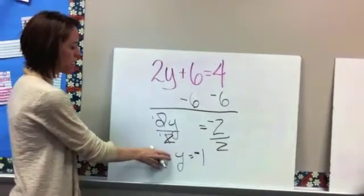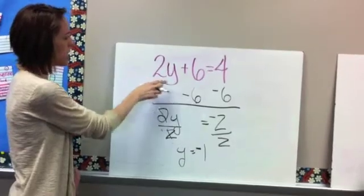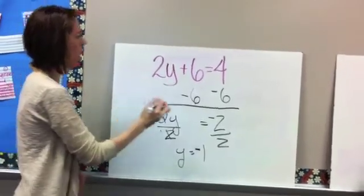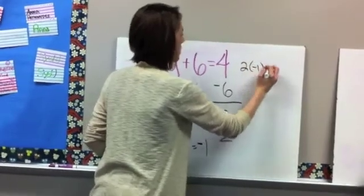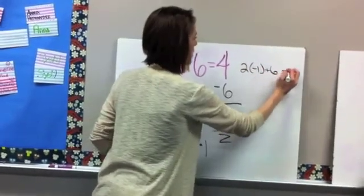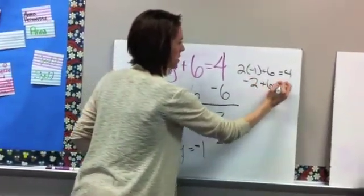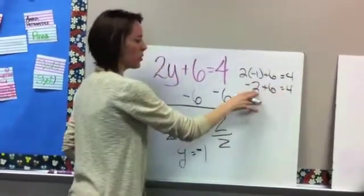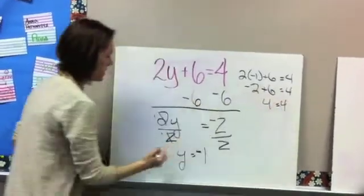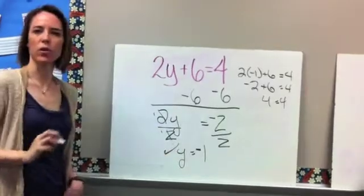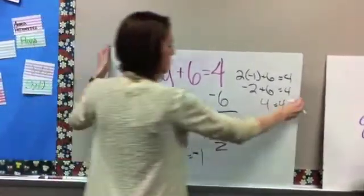So then what you'd want to do is take this number and plug it back in over here to see if it works. So if we plug in a negative 1 for the y, we would get 2 times negative 1 plus 6 equals 4. 2 times negative 1 is negative 2 plus 6 equals 4, and we know that negative 2 plus 6 is 4. So that means that that one works, and it is the solution to our problem. Let's go ahead and try another one.